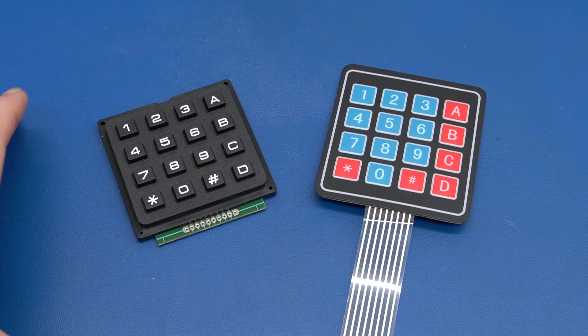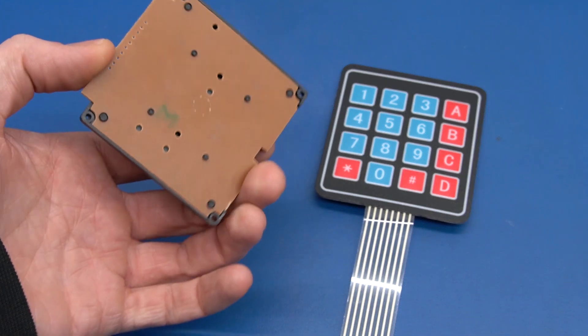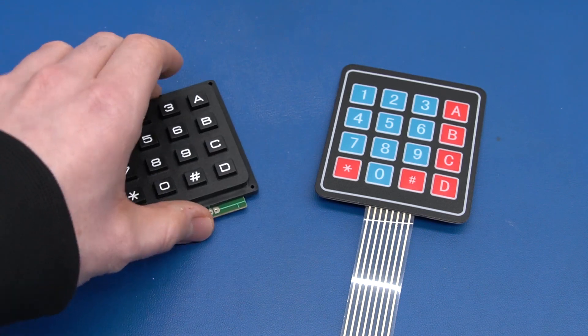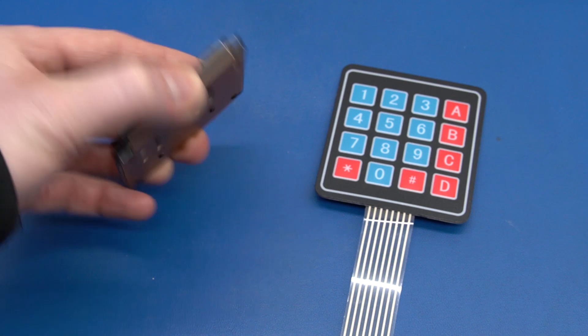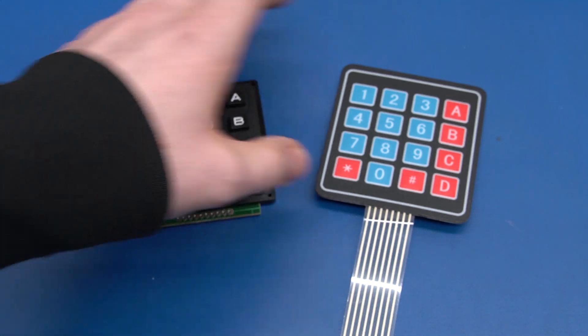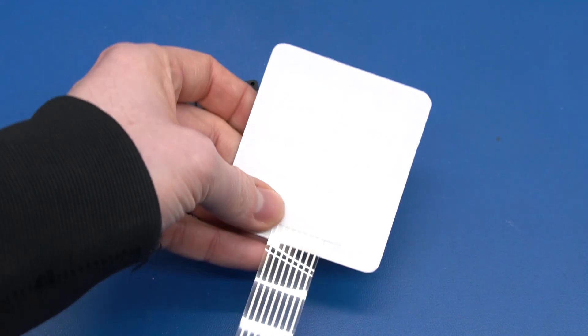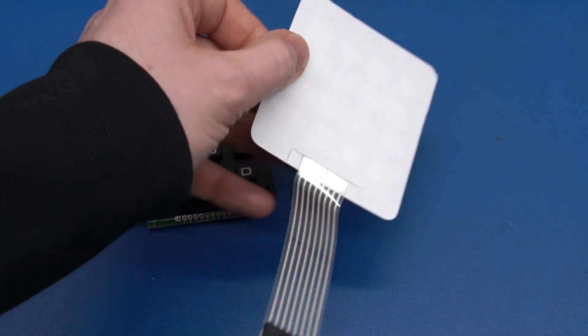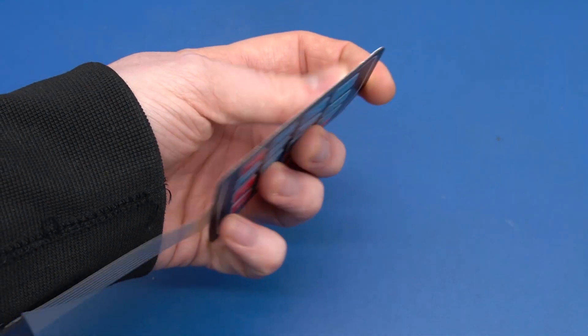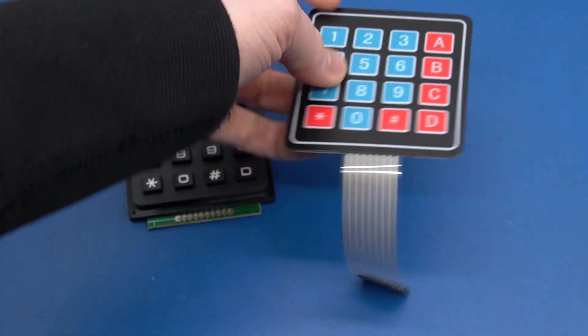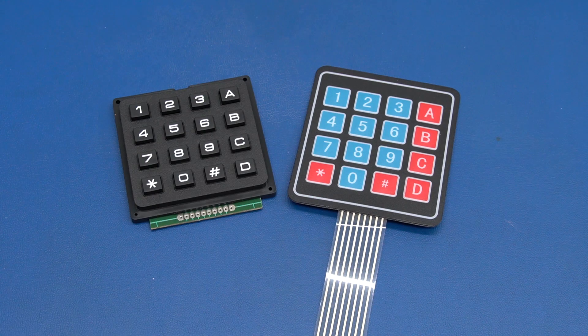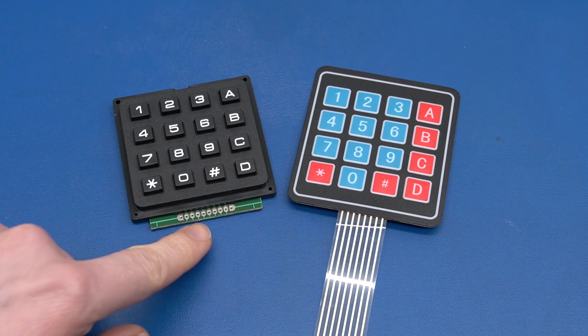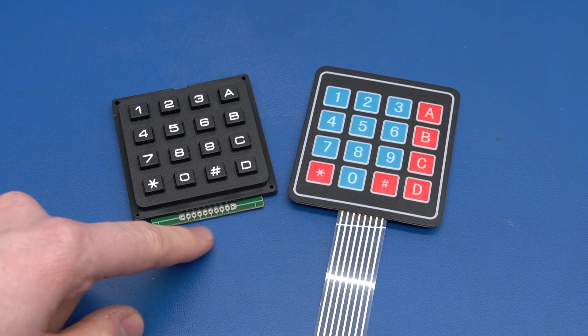You can get a ton of different ones, but I just happen to have two here. One that is like a screw-in type you attach from the back, and a sticky type which is like a thin vinyl that you can stick on front of something. Both share the same common interface though.